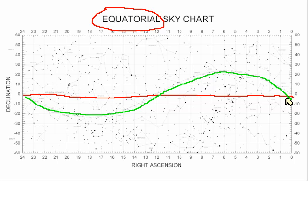Notice that right ascension is measured to the left. If we look at the top, you can see zero hours, one hour, two hours, eight hours, 13 hours, 20 hours, 24 hours — and then the chart starts over again back at zero. These numbers are reproduced across the bottom as well.